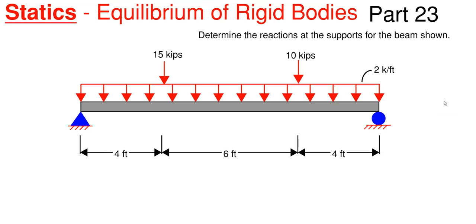So what we have going on for this beam here is that we have to determine the reactions for the pin, which is shown on the left, and the roller, which is shown on the right. Keep in mind that a pin can be displayed as a triangle and a roller can be displayed as a circle reaction.